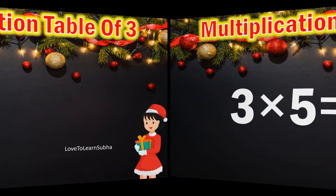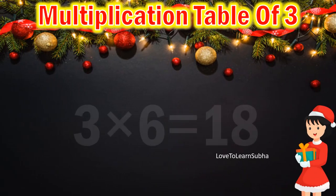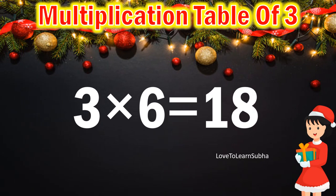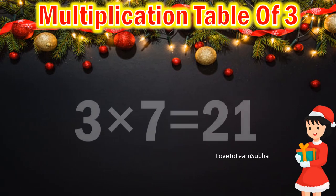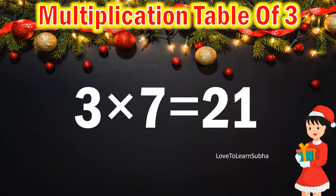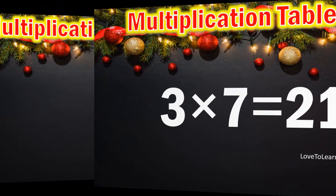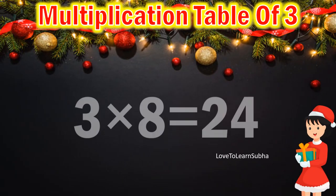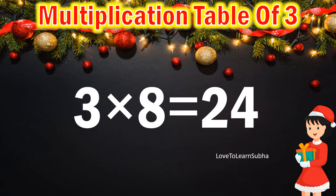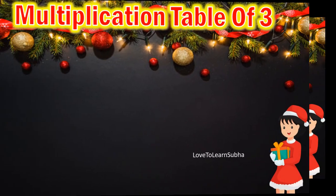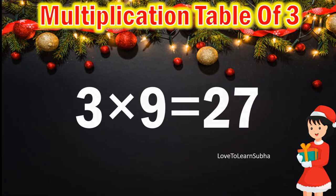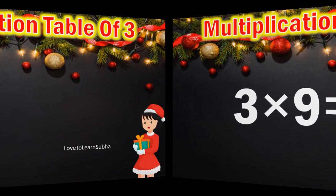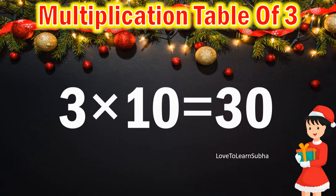3 6s are 18, 3 7s are 21, 3 8s are 24, 3 9s are 27, 3 10s are 30.